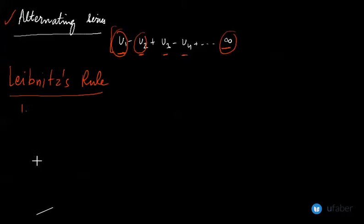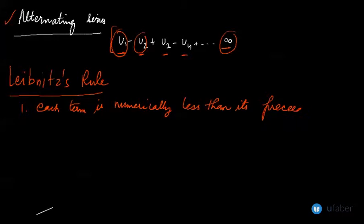In this there are two conditions which are required to be satisfied. The first condition is that each term is numerically less than its preceding term. So this is one condition that you need to fulfill, that is, |U_{n+1}/U_n| should always be less than 1.